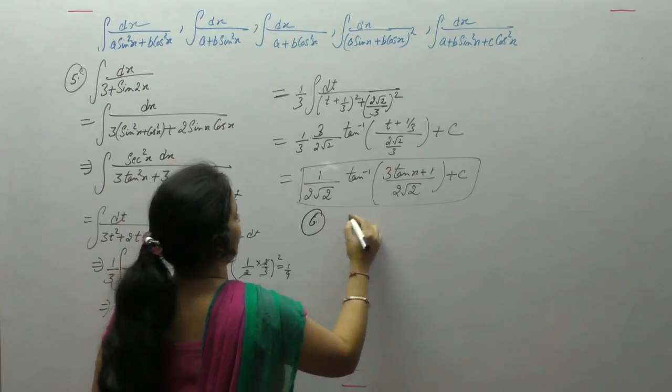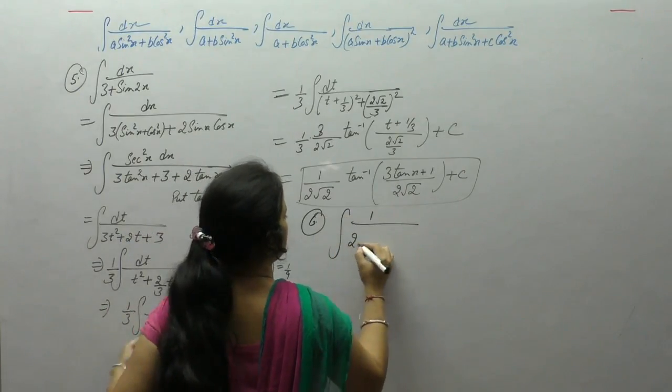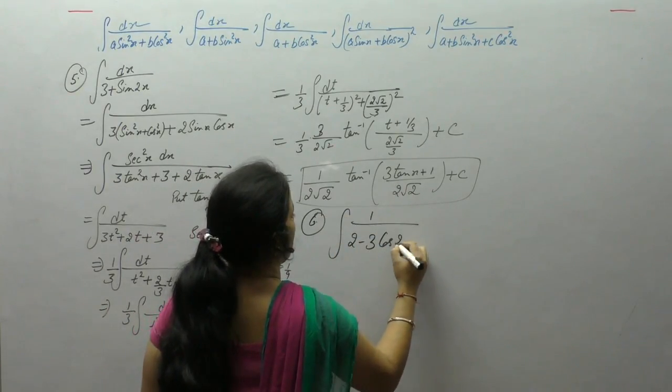Next is integral of 1 upon 2 minus 3 cos 2x.